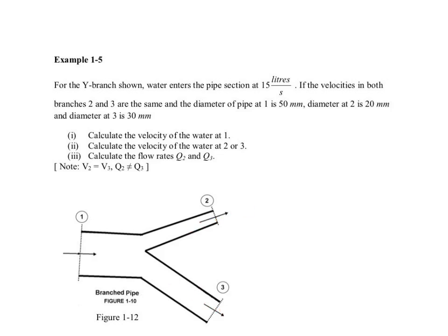If the velocities at both branches 2 and 3 are the same, so let's call the velocity at 2 V2 and the velocity at 3 V3. Both of them are the same, as indicated here. And you are told that the pipe diameter is 50mm on entrance, diameter 2 is 20mm, and diameter 3 is 30mm.